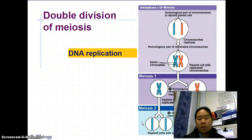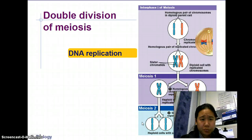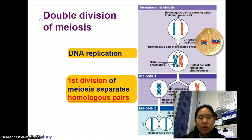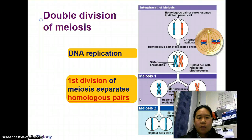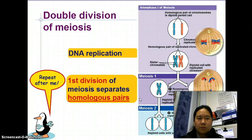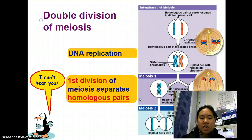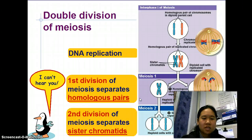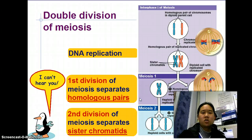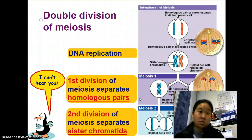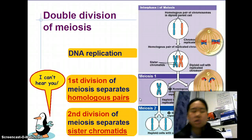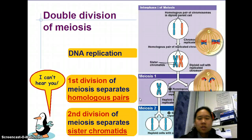In both divisions we replicate the A, T, C, G DNA. Then in the first division we divide homologous pairs — the chromosomes from mom and dad. In the second division we divide sister chromatids. First division: homologous pairs. Second division: sister chromatids. Keep those separate — homologous pairs in the first division, sister chromatids in the second.